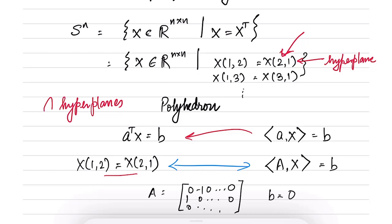So I hope I have made my point clear that this equation is a hyperplane and S^n being an intersection of hyperplanes is therefore a polyhedron.